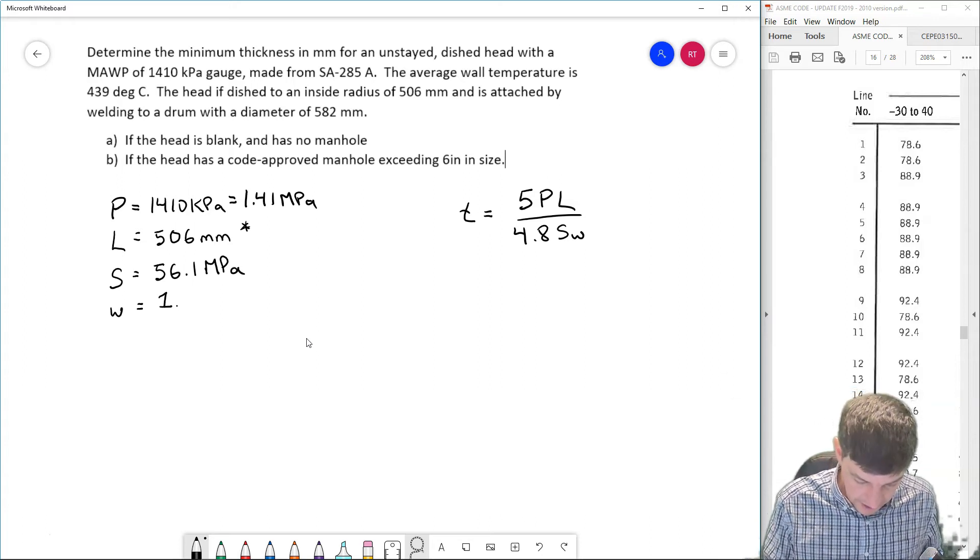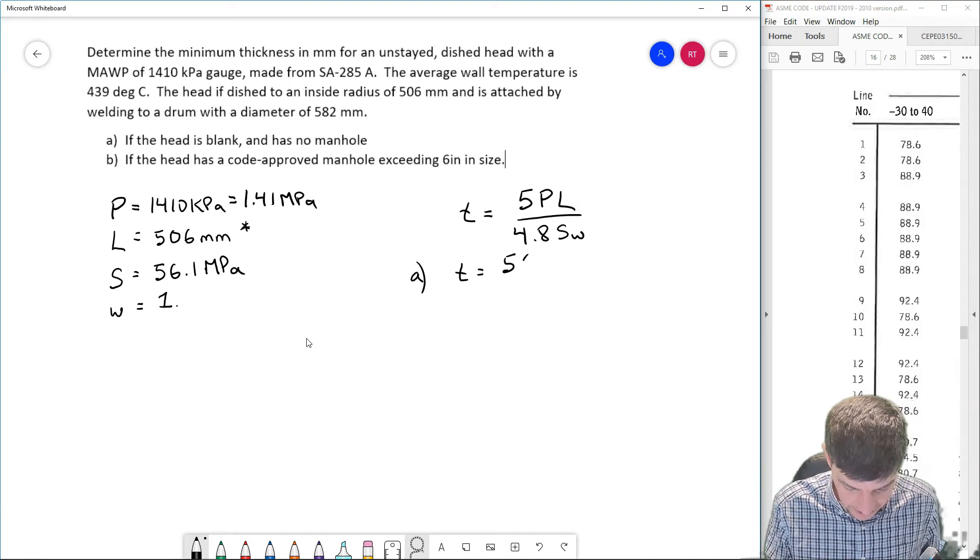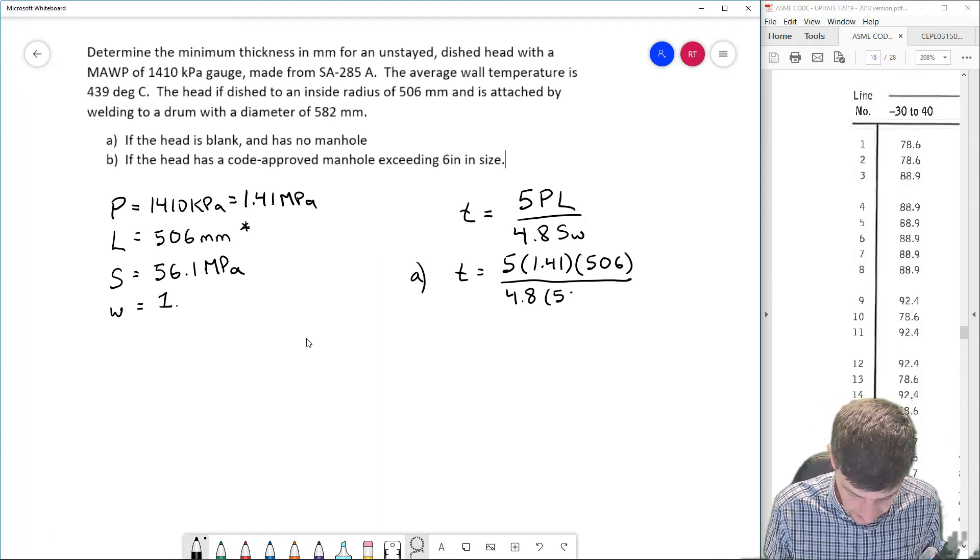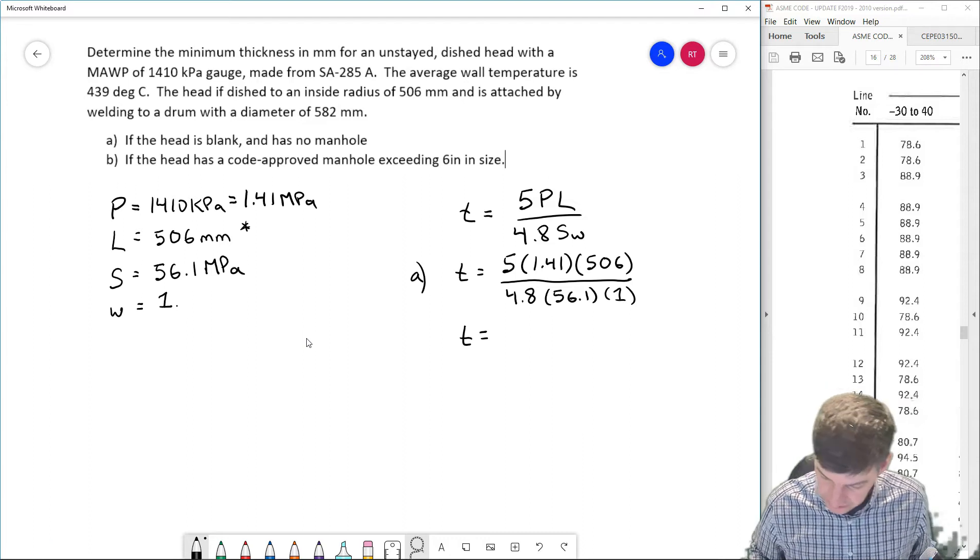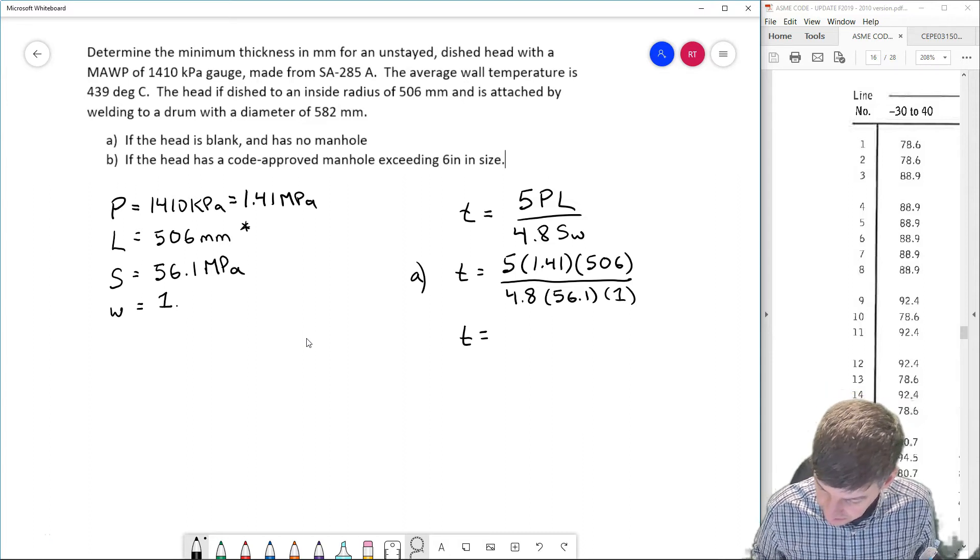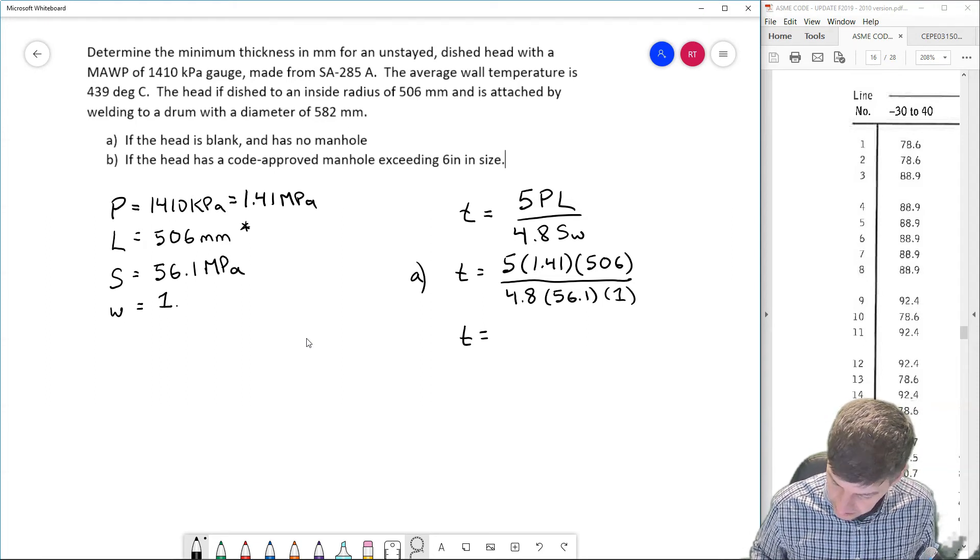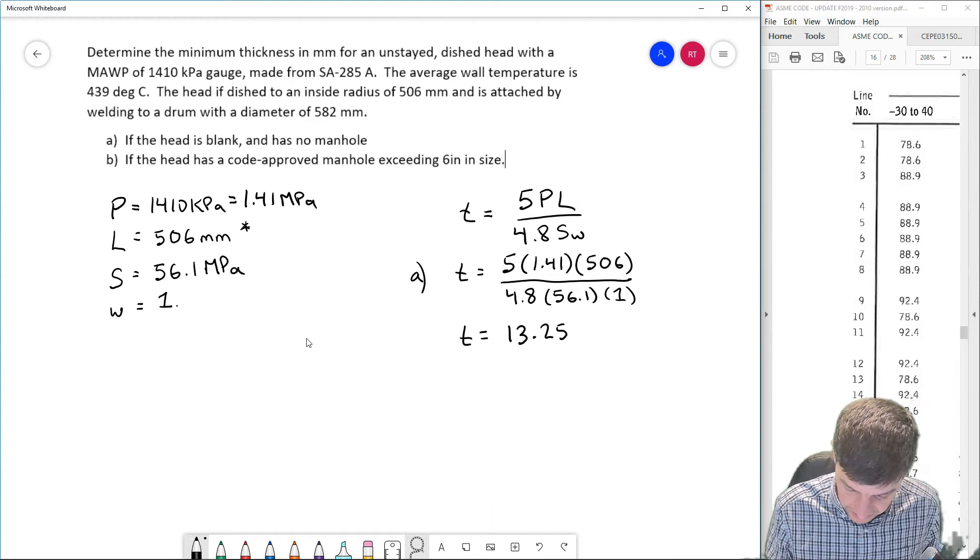And if the head is blank and has no manhole, then part A, I can just throw this into my equation. So thickness is going to be equal to 5 times 1.41 times L, 506, divided by 4.8 times my strength, 56.1, times W, which is one. And I would have a required thickness of 5 times 1.41 times 506 divided by 4.8 divided by 56.1 and divided by 1 gives me a thickness of 13.25 millimeters.